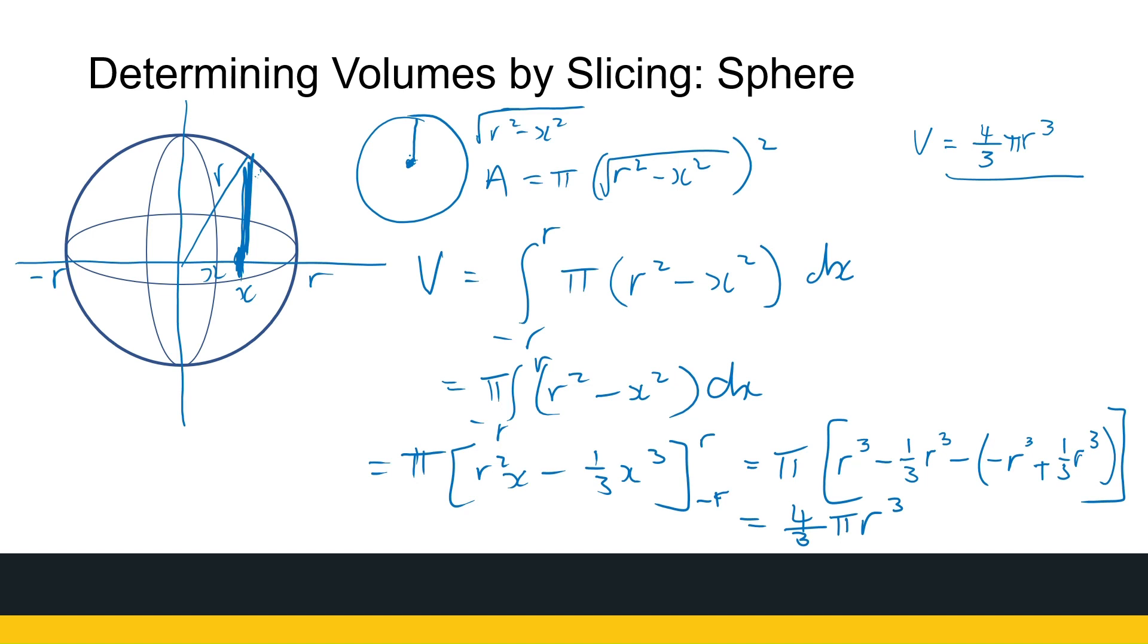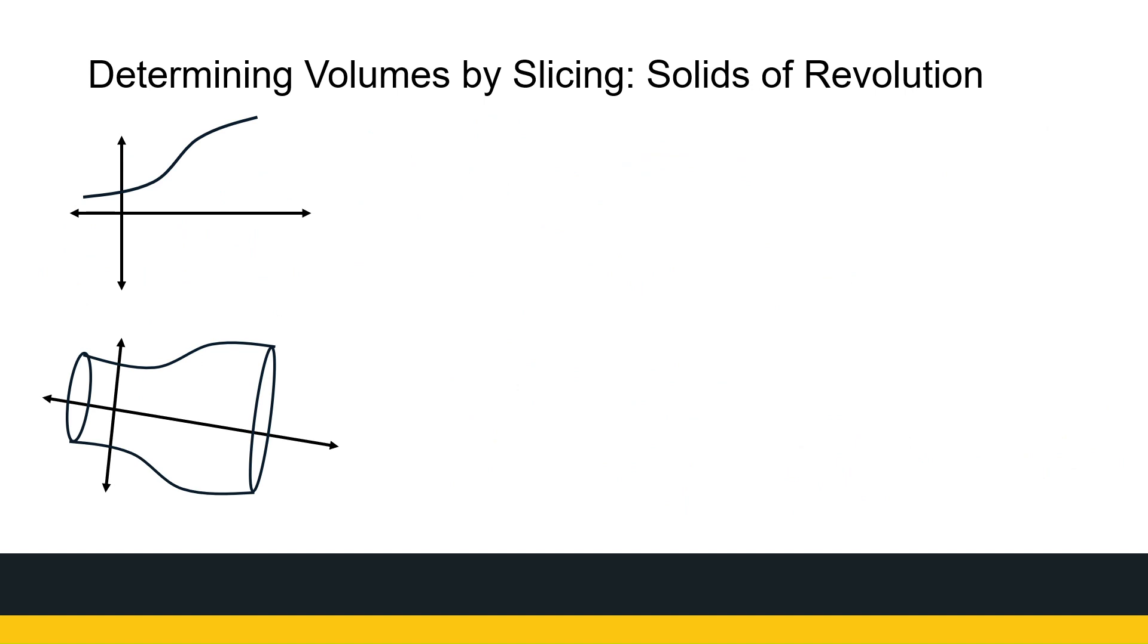But now we're going to move on to see what happens if I've got a function, because the process stays the same. So if I've got a graph of f of X, and I take this, and I rotate it about the X axis, and I get a solid as given here.